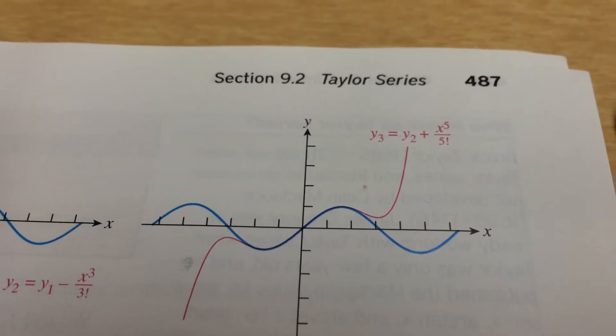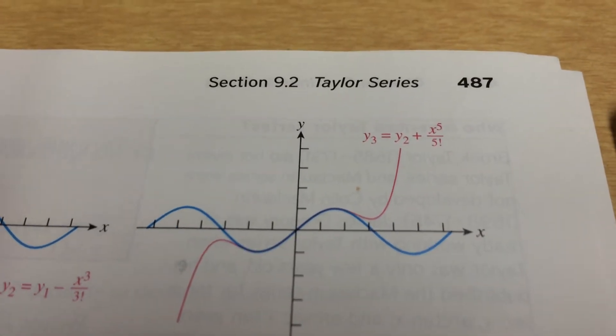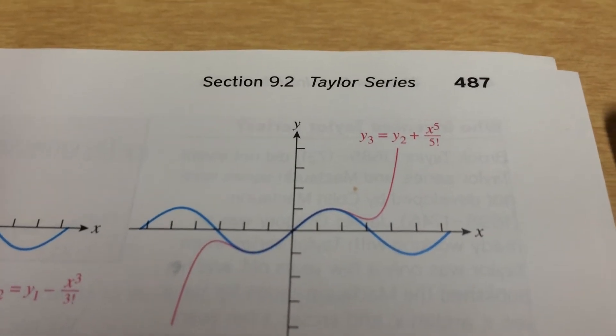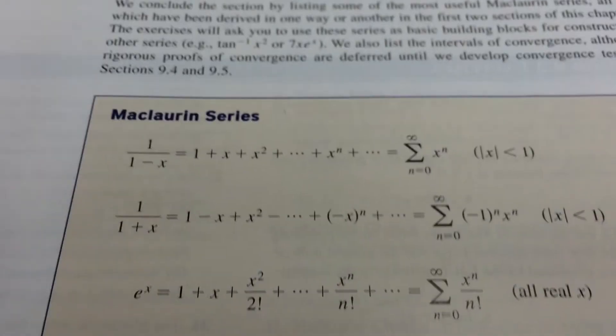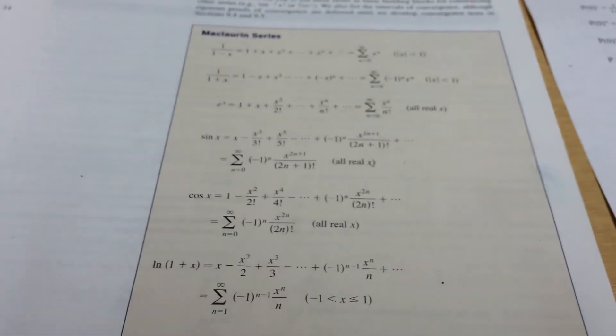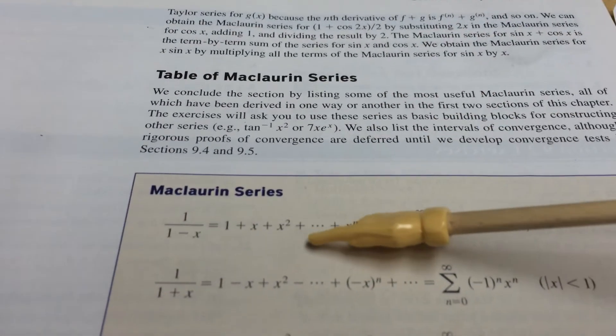This is going to be on page 487 if you want to look at that detail again. The other one you need to look at is on page 491, and that's the Maclaurin series. There are several of these and we're going to have a quiz on this, so make sure you start looking over them — these are the patterns.